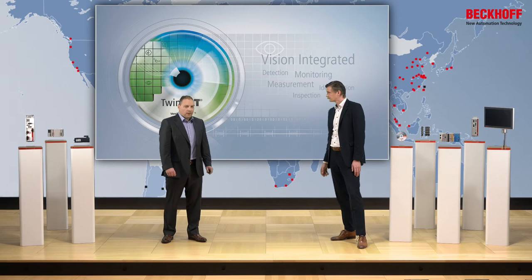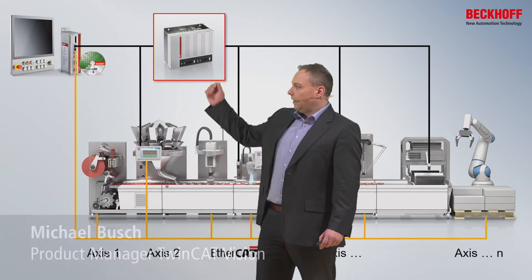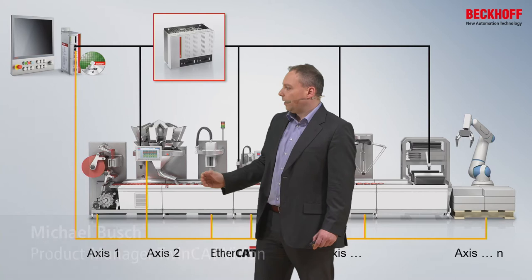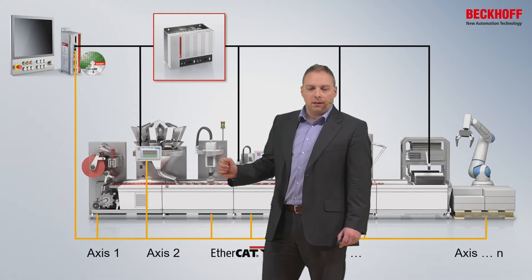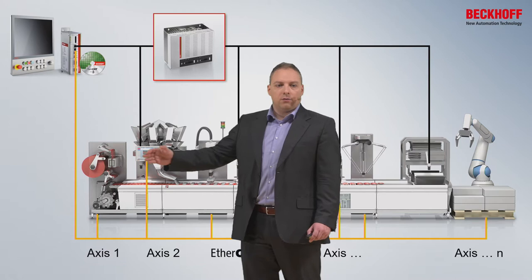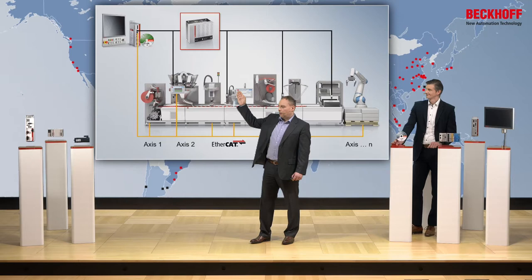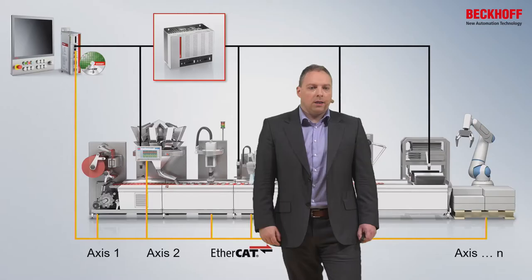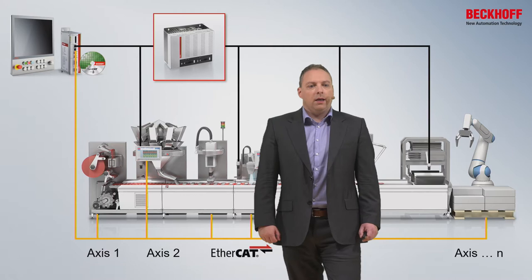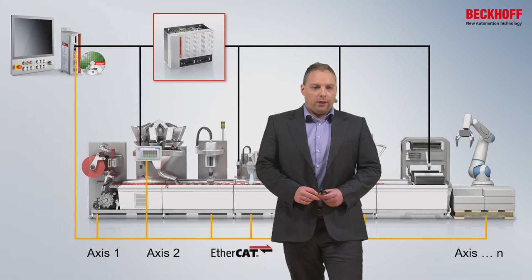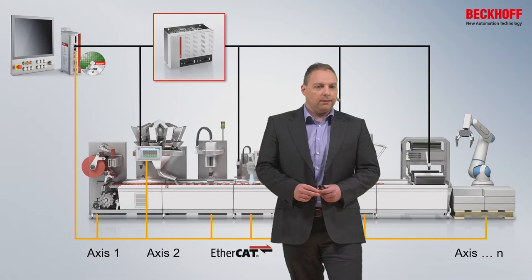If we take a look at classical solutions first, we will see typically an additional machine controller where the PLC is running and controlling the axes and the machine sequence. Connected to this system we see additional vision devices, for example a smart camera or an additional vision IPC, and connected to that PC all the other cameras. In both cases we need an additional interface that needs to be programmed, and we have additional hardware systems requiring special knowledge — typically one programmer for the PLC and one for vision. So you always need two experts to set up one machine.